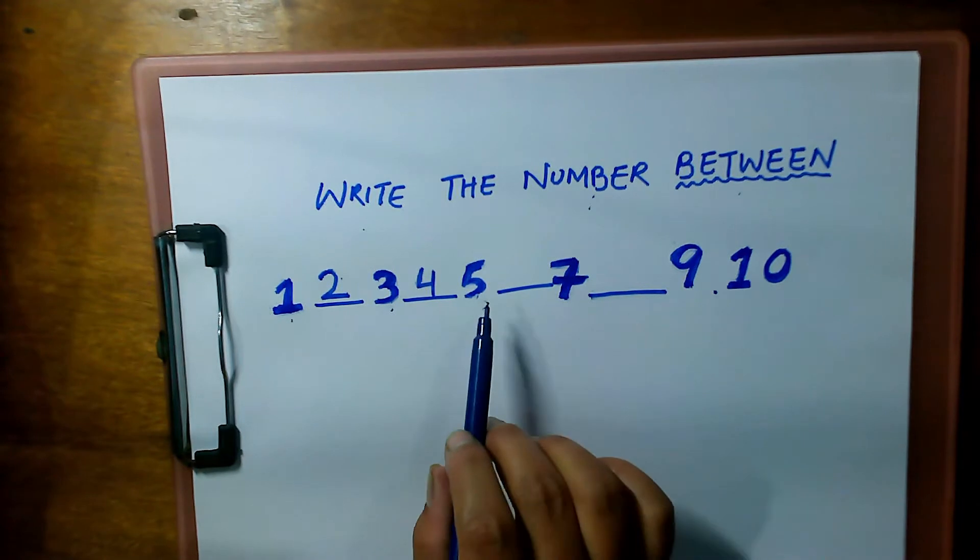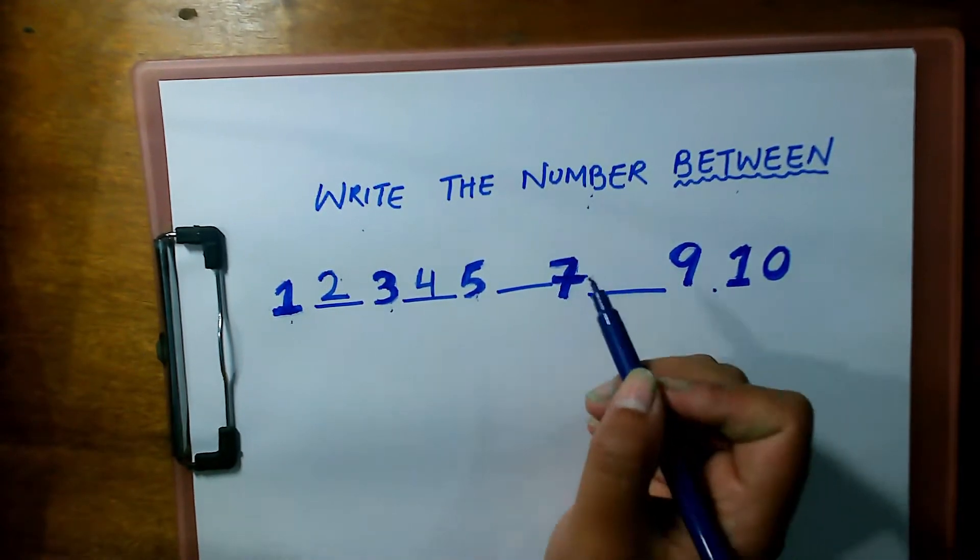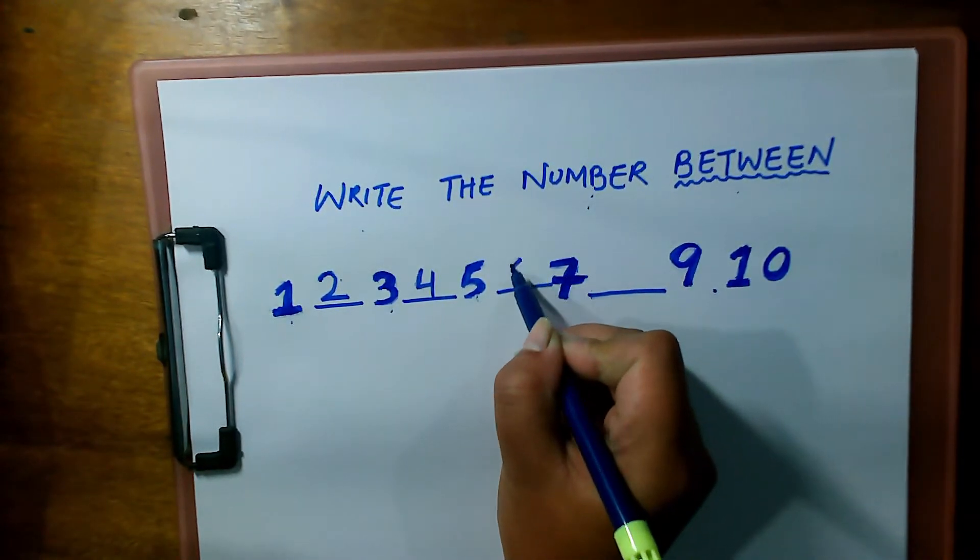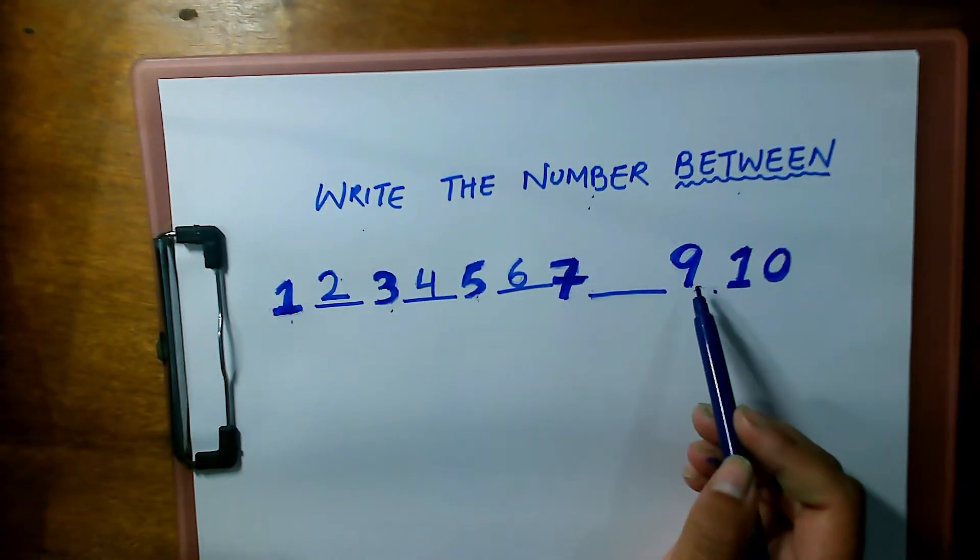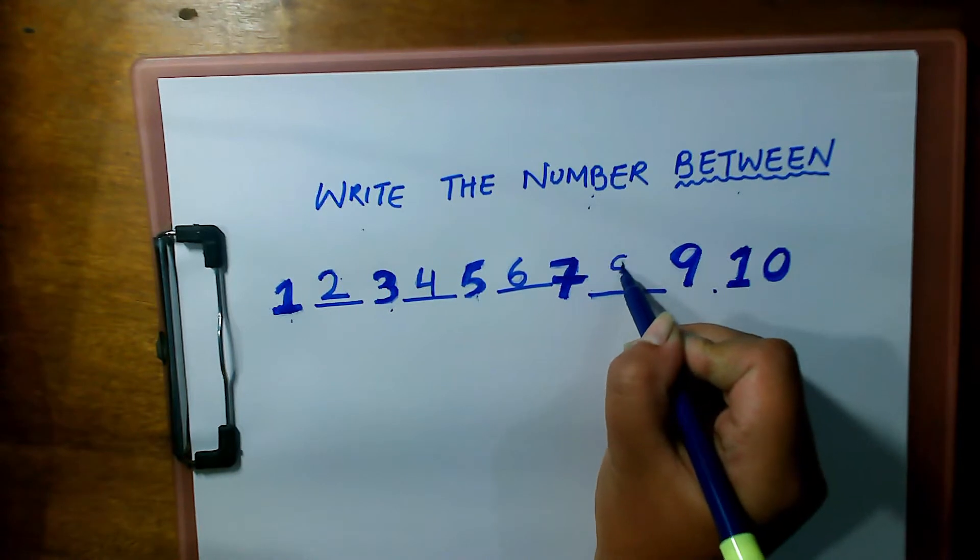What comes between five and seven? Number six. What comes between seven and nine? Eight.